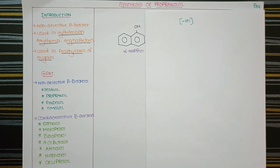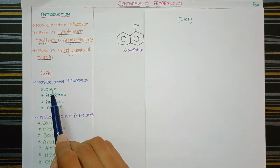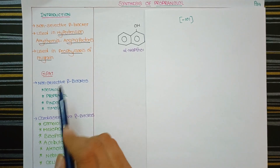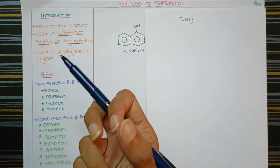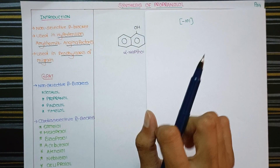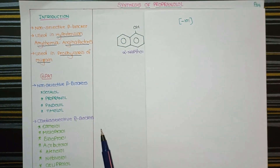If we see the '-lol' suffix, it identifies the drug as a beta blocker. Similarly, the '-pril' suffix identifies drugs as ACE inhibitors — a useful pattern for drug classification.